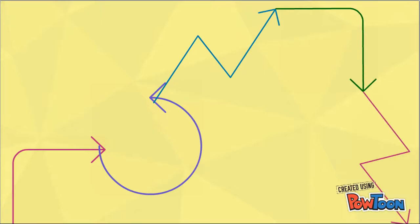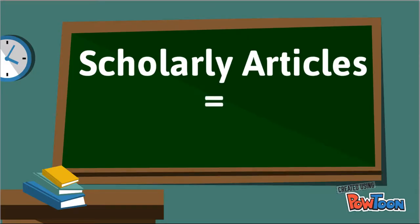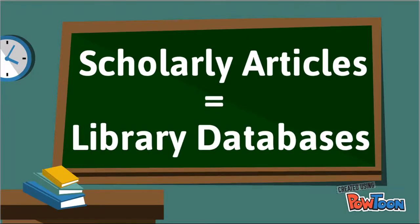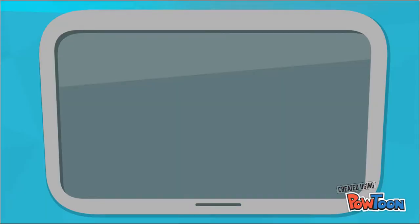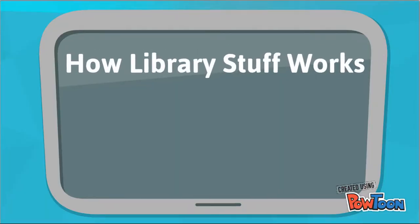After we've identified the kinds of resources that might be relevant to our topic, we have to create a strategy to access them. For scholarly articles, the library databases are probably our best bet. If you are unfamiliar with how to use these databases, be sure to check out the How Library Stuff Works videos filed under Research.